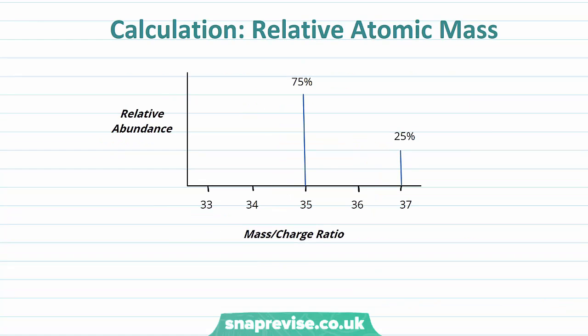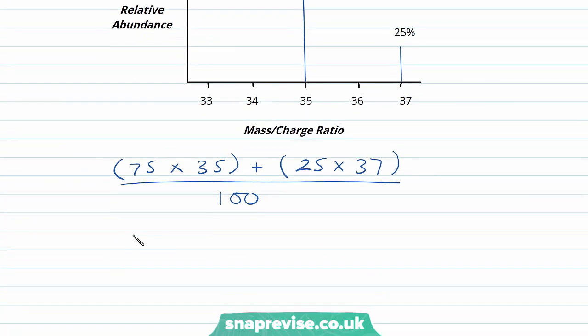So what can we do with these measurements of relative abundance? Well, we can actually work out the relative atomic mass. So what we do in order to work this out is we multiply the percentage abundance, which is 75 percent, by the mass, which is 35. We'll add that to the second one over here, the second isotope, so that's 25 multiplied by 37.